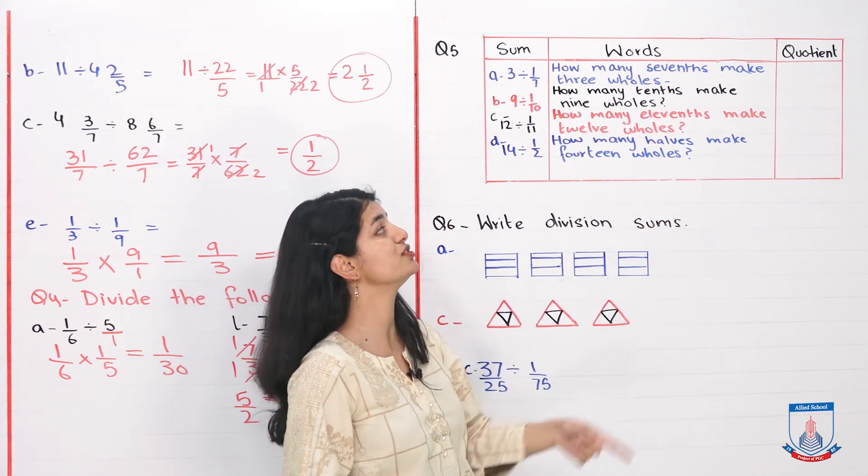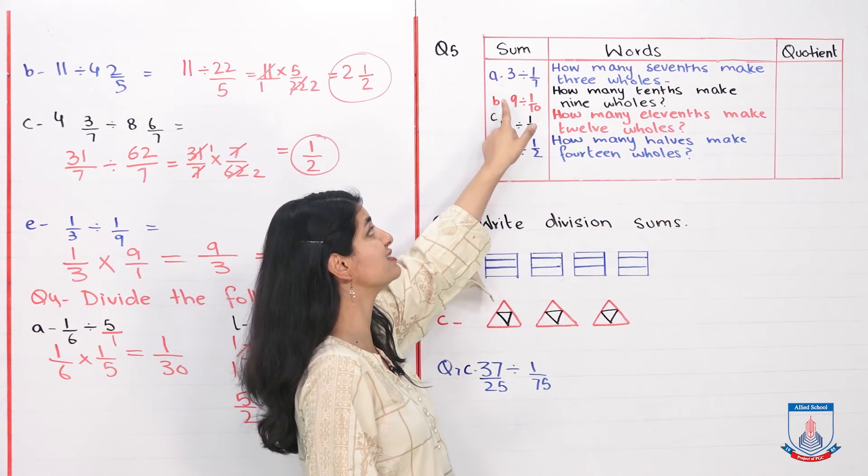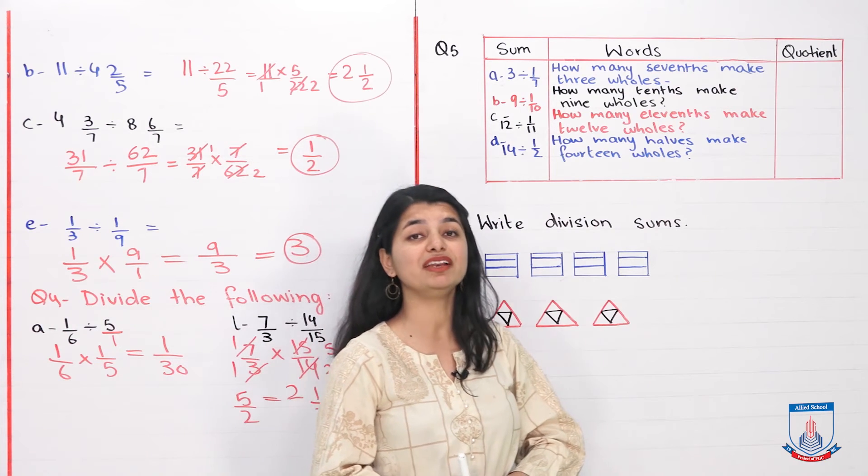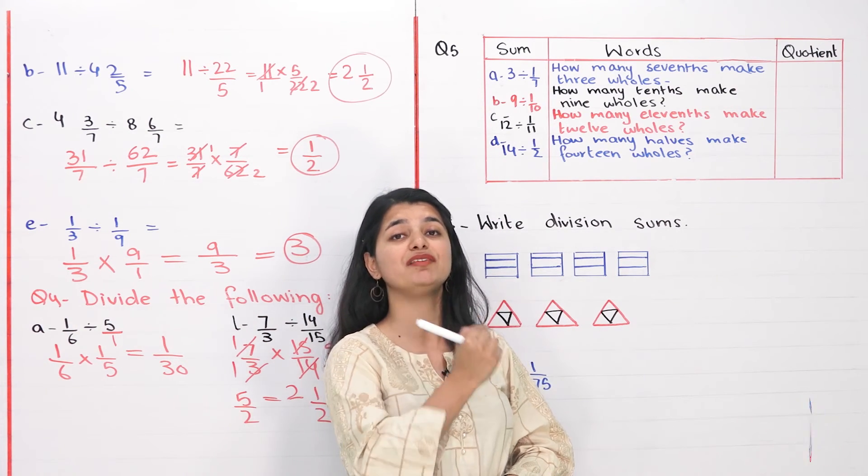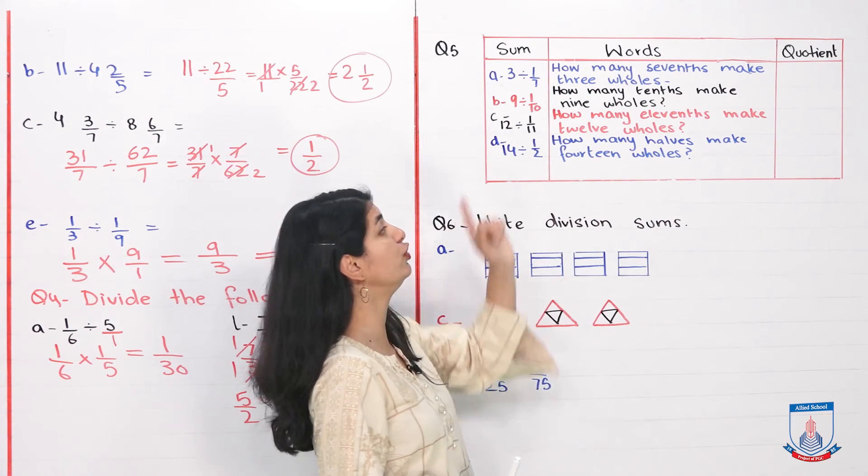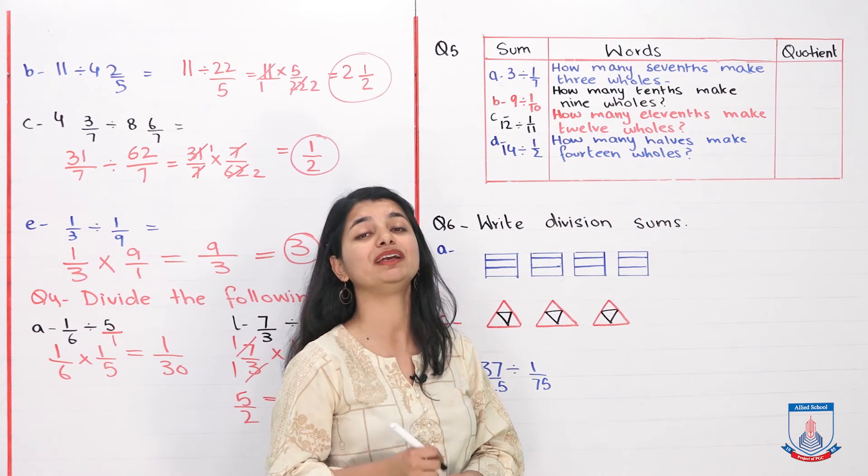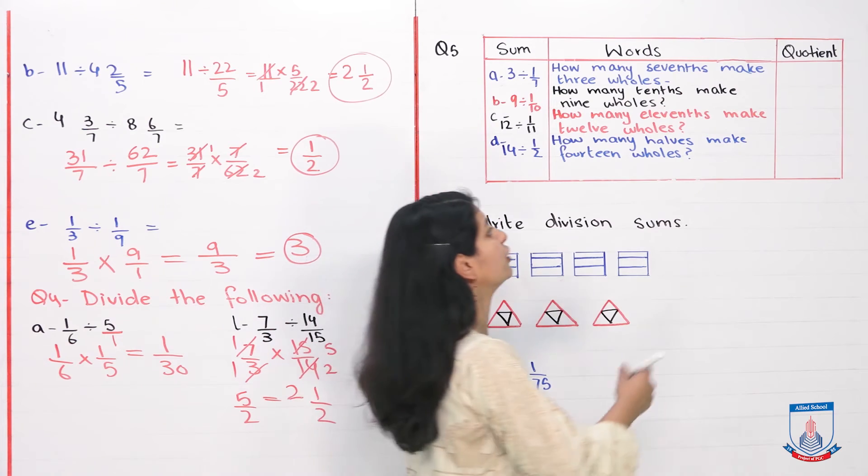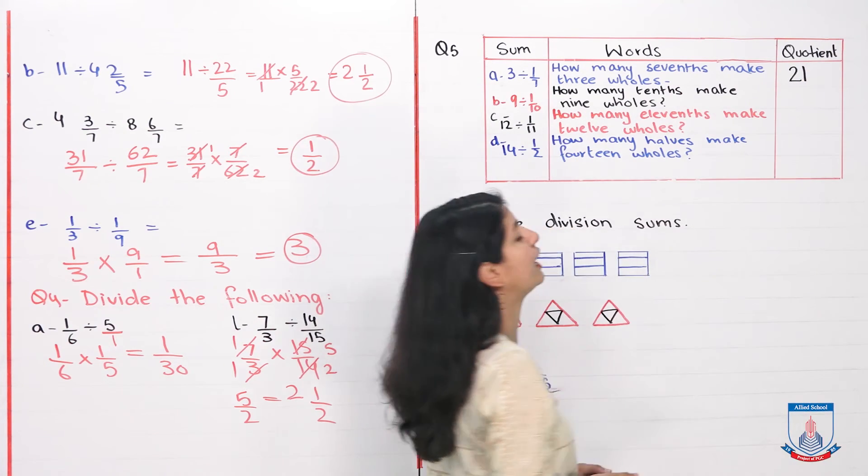You solve this and write the quotient, meaning its answer. How do we do that? Very easy. 3 divided by one by seven, you invert this, one by seven becomes seven over one, multiply by three. When three into seven over one, three into seven, you simply get the answer twenty one. Divide by one, we're left with twenty one. This is your answer.